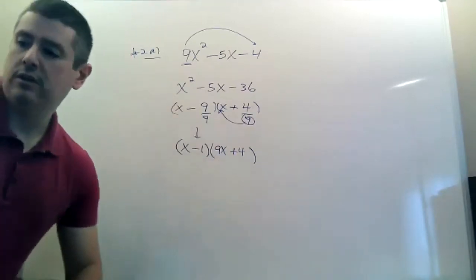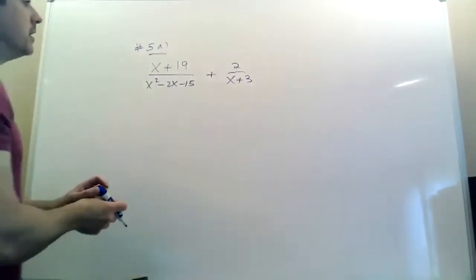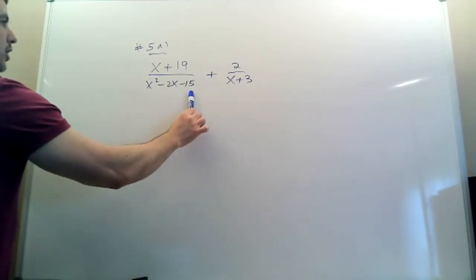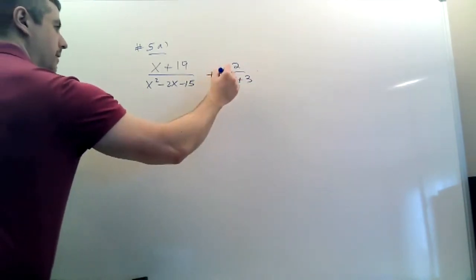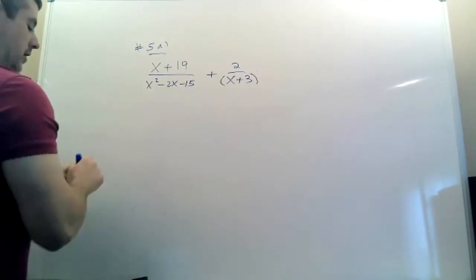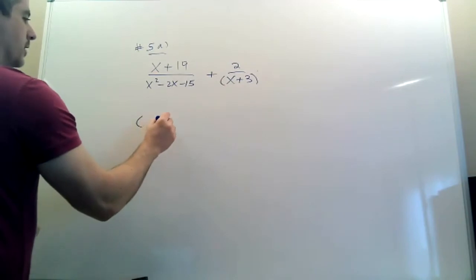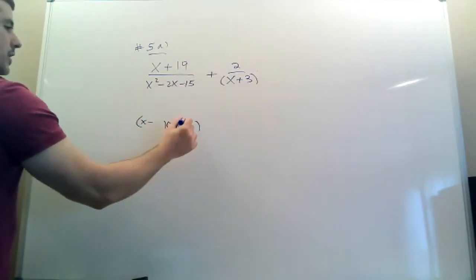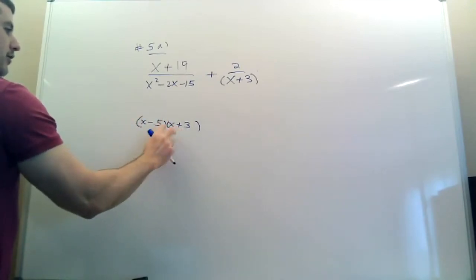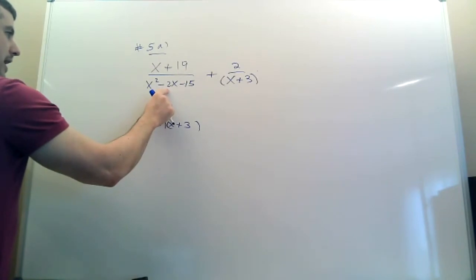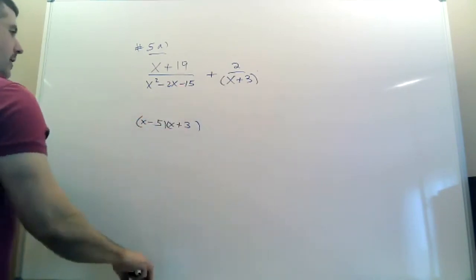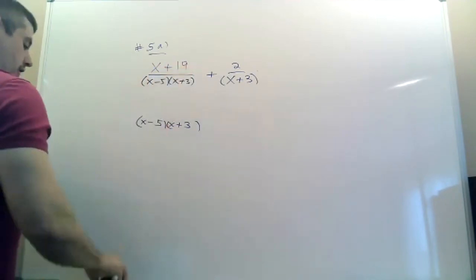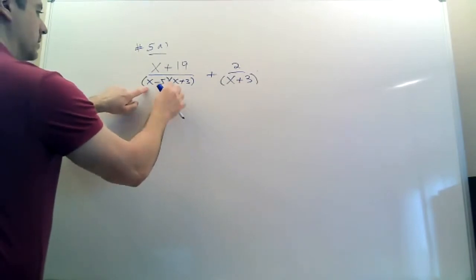Question 5a from the practice. The first step is to factor the bottom — if you don't, you don't know what the fraction needs. The goal is to make them look the same. I know one factor is going to be x plus 3, so factor the bottom: x and x, minus and plus. The other factor: negative 5 plus 3 — when you subtract them you get negative 2; negative 5 times positive 3 is negative 15. So the bottom factors as (x minus 5)(x plus 3). Get rid of that and put the factored form there. This is your LCD.